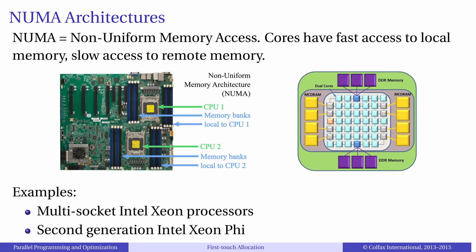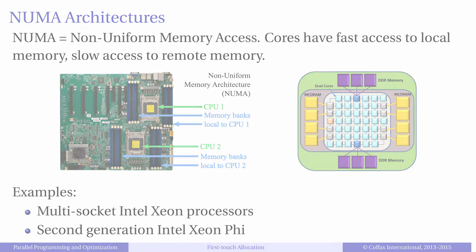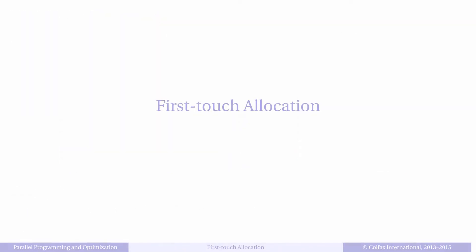The key for NUMA awareness is data locality. Tiling or recursively processing your dataset may be one of the methods to achieve NUMA awareness. But there is one more optimization for NUMA systems which is often a low-hanging fruit. This optimization is favorable first-touch allocation.